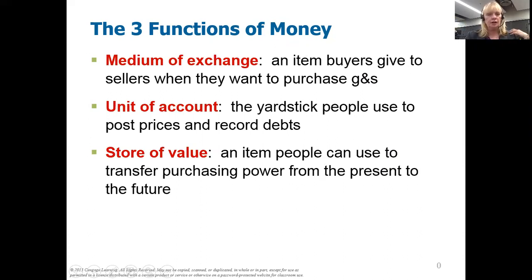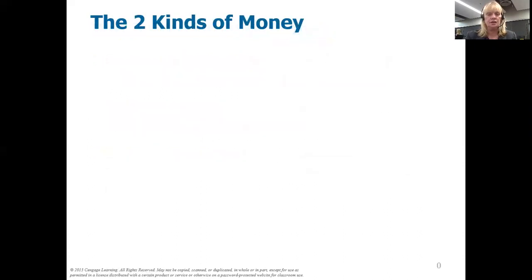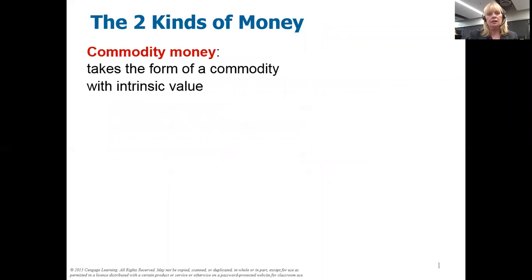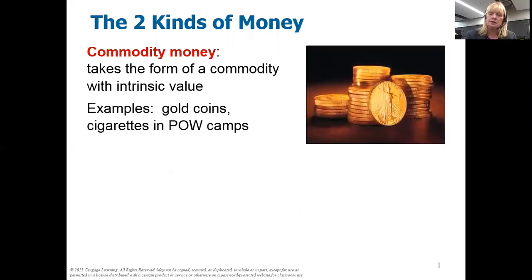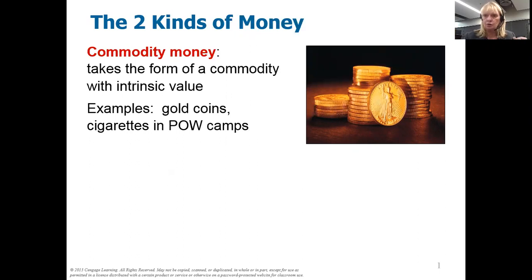There are a couple different kinds of money, and we often hear this discussed in political circles. The first is commodity money. Commodity money is just like it sounds — it takes the form of a commodity with an intrinsic value. You often hear politicians talk about the gold standard. Gold coins have a monetary commodity value. Also in prison movies and things like that, we see prisoners often exchange cigarettes as a form of money. It works in the same way.